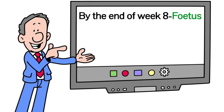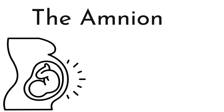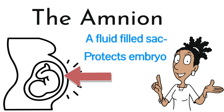By the end of the eighth week, the embryo is no longer termed an embryo — it's a fetus. All the organs have been formed, and by the end of week 12 the placenta is fully functioning, and if you were to have a scan you would be able to determine the sex of the fetus. You're often examined on the amnion — this is the protective membrane or sac that forms around the embryo to protect it. It's filled with fluid and generally forms around the time of implantation.